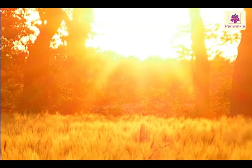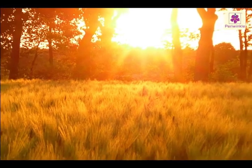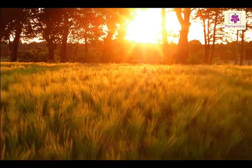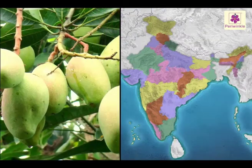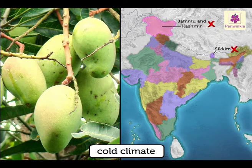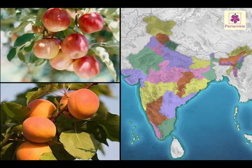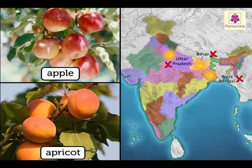Temperature is another very important factor. The type of food that can be grown in a place depends on the temperature of that place. Mangoes cannot be grown in Jammu and Kashmir and Sikkim as the climate is cold. Similarly, fruits like apple and apricot cannot be grown in Bihar, West Bengal and Uttar Pradesh, as it is too hot and these fruits require a cooler climate.